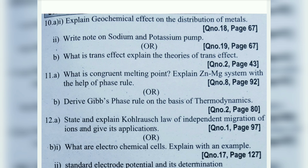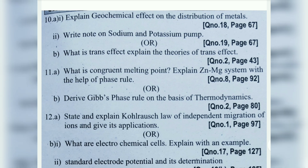11th (a): What is congruent melting point? Explain the zinc and magnesium system with the help of phase rule — previously Pb-Ag came, now zinc and magnesium. 11th (b): Derive Gibbs phase rule on the basis of thermodynamics — this is also repeated.